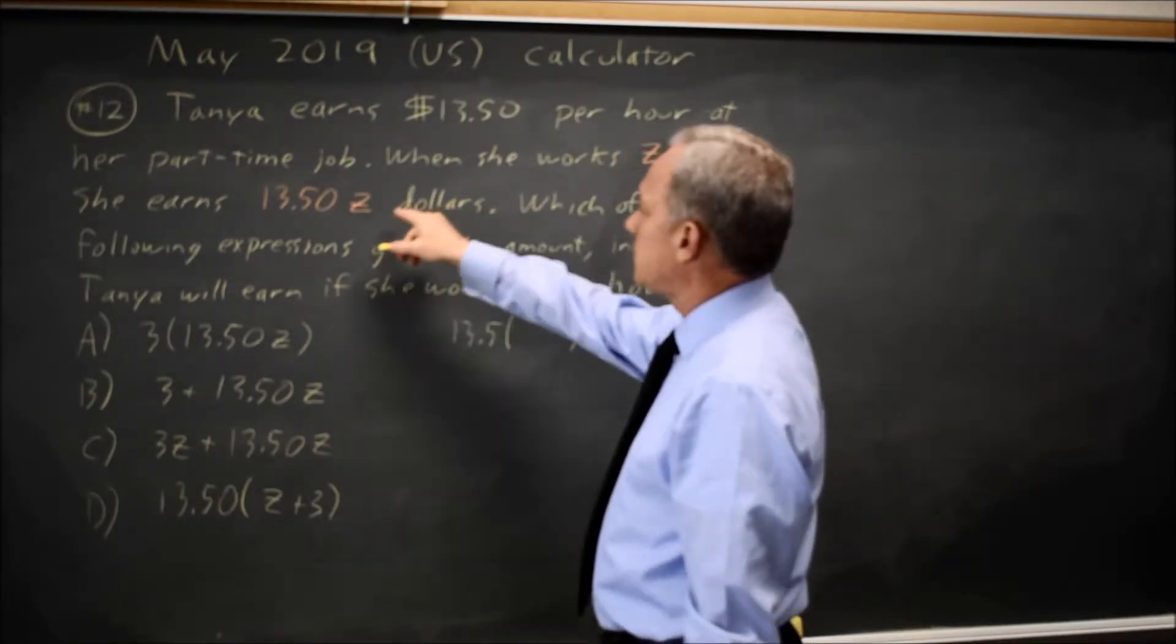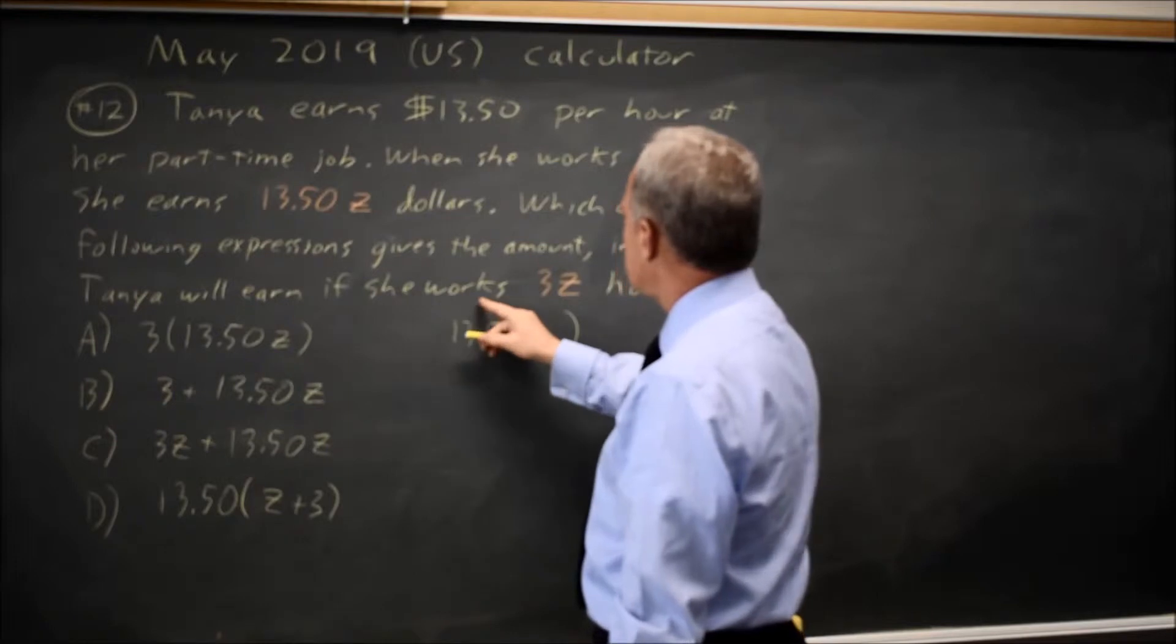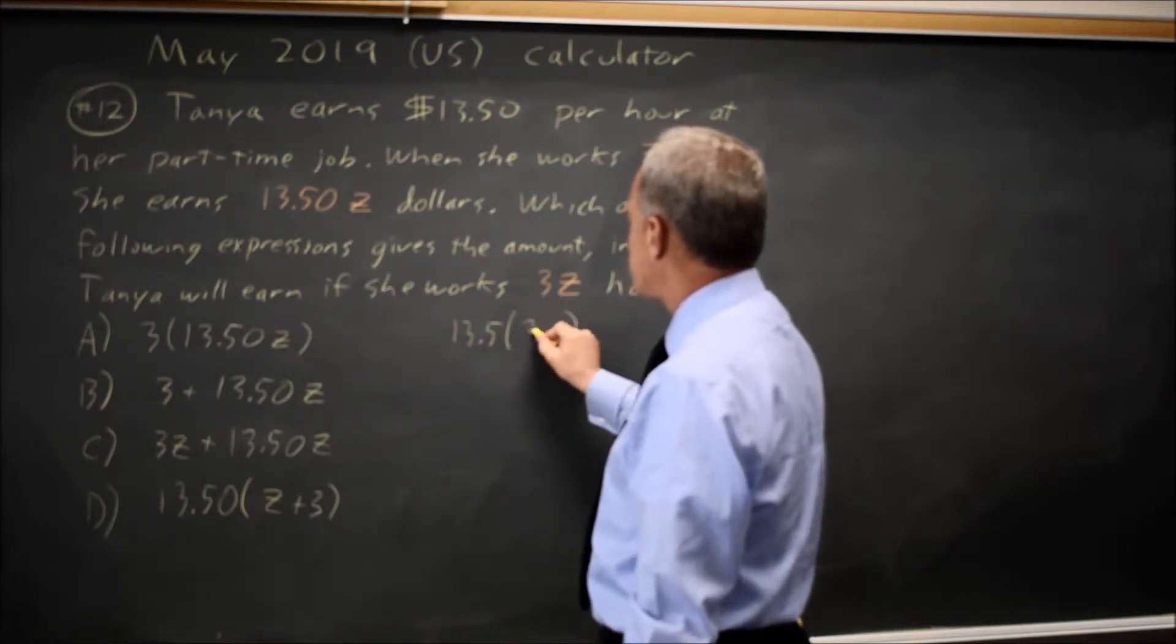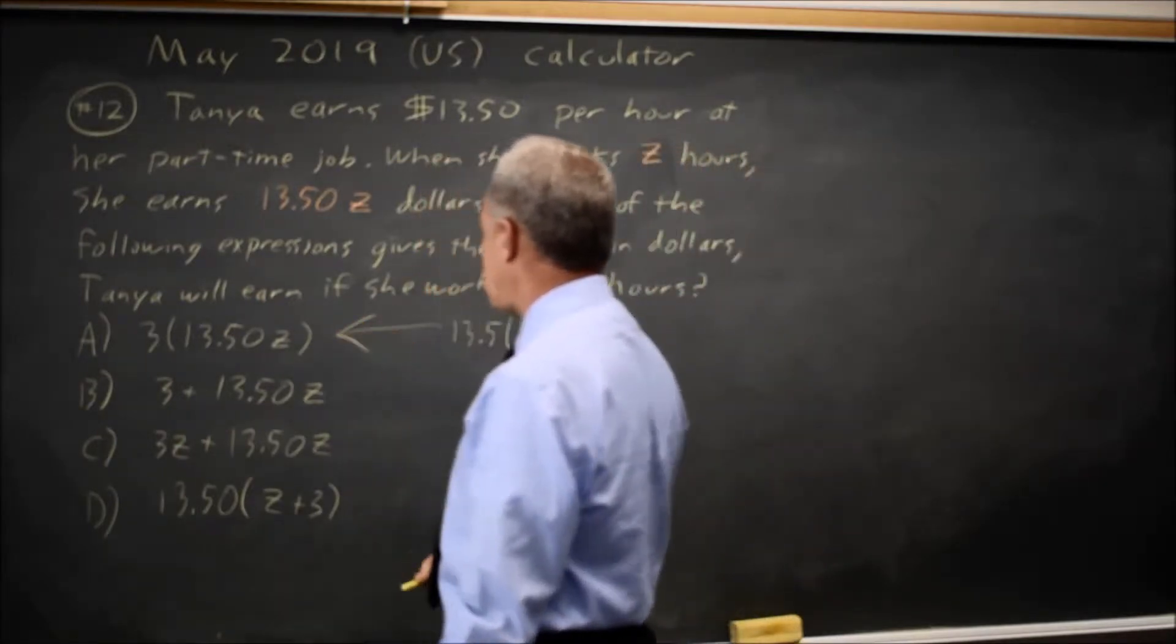So if the number of hours worked is Z, she makes 13.5 times Z. If the number of hours worked is 3Z, she makes 13.5 times 3Z, which is choice A.